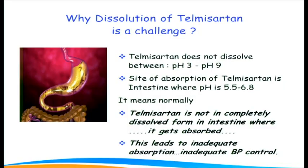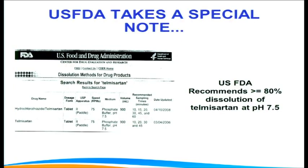Telmisartan is classified as a BCS Class 2 agent, which means it has low solubility and high permeability. Under ordinary circumstances, formulations without technological excellence result in telmisartan not being completely dissolved in the intestine where it gets absorbed, leading to inadequate absorption and inadequate blood pressure control.